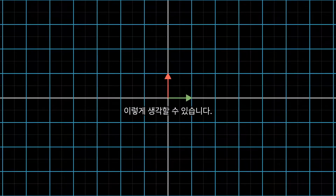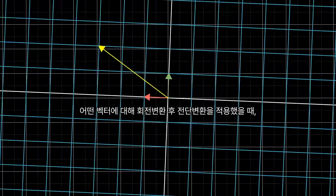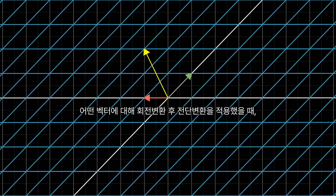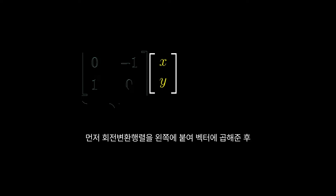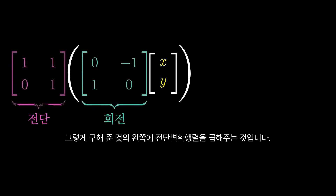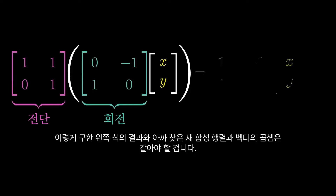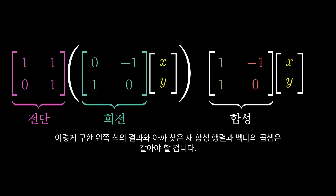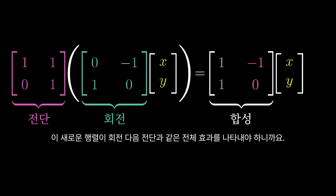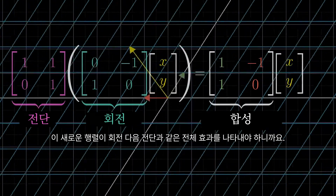Here's one way to think about that new matrix. If you were to take some vector and pump it through the rotation, then the shear, the long way to compute where it ends up is to first multiply it on the left by the rotation matrix, then take whatever you get and multiply that on the left by the shear matrix. This is, numerically speaking, what it means to apply a rotation then a shear to a given vector. But whatever you get should be the same as just applying this new composition matrix to that same vector, no matter what vector you chose, since this new matrix captures the same overall effect as the rotation-then-shear action.